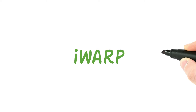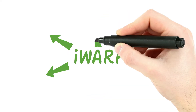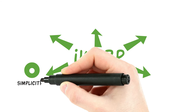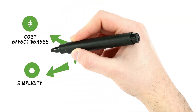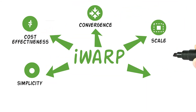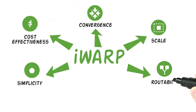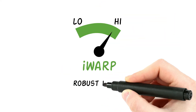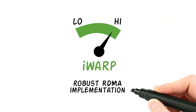Unlike Infiniband, iWarp is multi-sourced and delivers all of Ethernet's advantages — simplicity, cost-effectiveness, convergence, scale and routability. With a very high-performance, robust RDMA implementation,